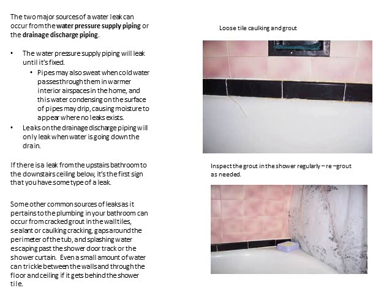Some other common sources of leaks pertaining to the plumbing in your bathroom can occur from cracked grout in the wall tiles, ceiling or cracking gaps around the perimeter tub, and splashing water escaping past the shower door track or the shower curtain. Even a small amount of water can trickle between the walls and through the floor and ceiling if it gets behind the shower tile.